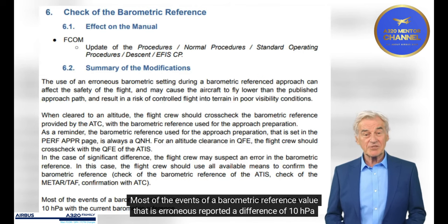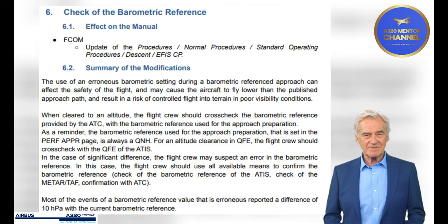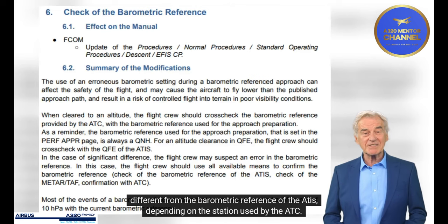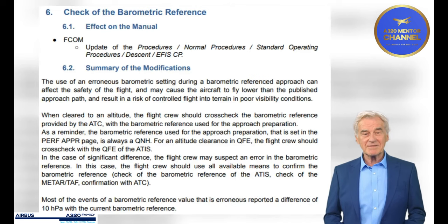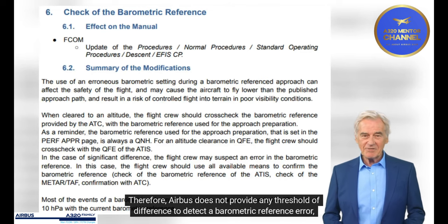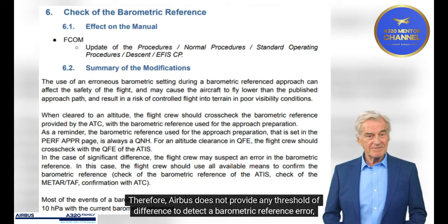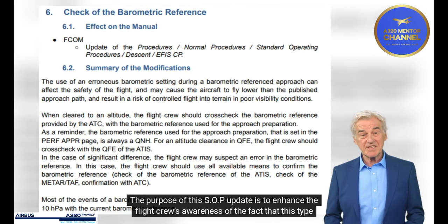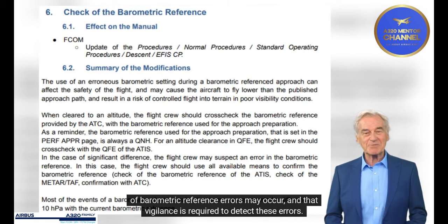Most events of an erroneous barometric reference value reported a difference of 10 hectopascals with the current barometric reference. However, the barometric reference provided by the ATC when cleared to an altitude may be slightly different from the barometric reference of the ATIS, depending on the station used by the ATC. It does not always mean that there is a QNH error. Therefore, Airbus does not provide any threshold of difference to detect a barometric reference error, but highlights that a significant difference can be the symptom of a barometric reference error. The purpose of this SOP update is to enhance the flight crew's awareness that this type of barometric reference error may occur and that vigilance is required to detect these errors.